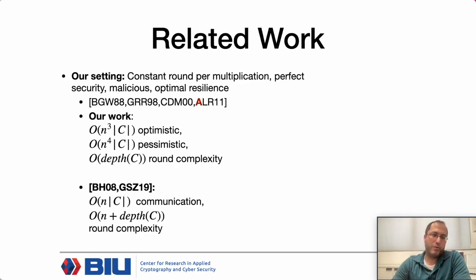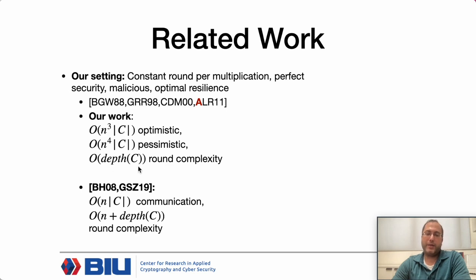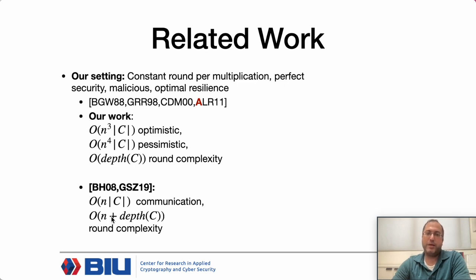Some related work. Our setting is constant-round pair multiplication with perfect security, malicious security, and optimal resilience—meaning at most one-third of parties are corrupted. We achieve n-cubed communication in the optimistic case, n-to-the-4 in the pessimistic case, and round complexity proportional to the multiplicative depth of C. There are more efficient protocols in the perfect setting based on player elimination, where the best protocol achieves linear dependency on n.